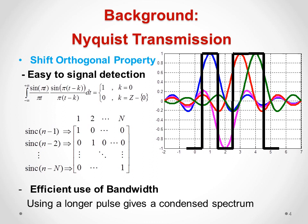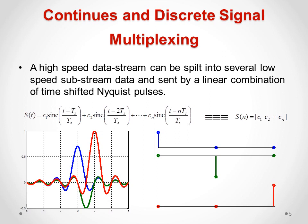We can send a wider pulse to reduce the spectrum width of the pulse — a wider pulse in the time domain has a shorter frequency response. So in this figure, for example, in four seconds we can send four rectangular pulse signals, but if we send Nyquist pulses we can use longer pulses of five or six seconds, and this gives us some bandwidth efficiency. Because of these properties, Nyquist pulses are not only considered for pulse shaping but are also a good option for signal multiplexing.